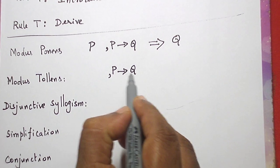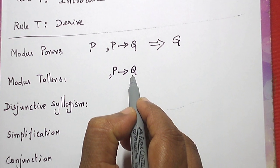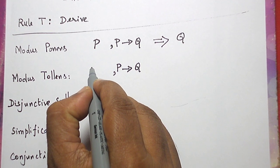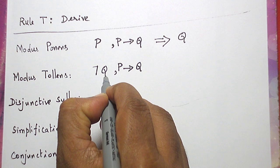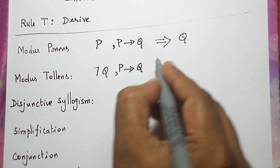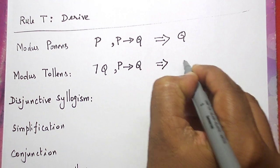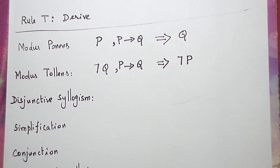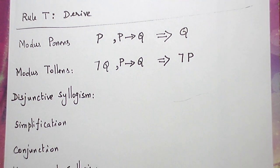And if we have a conditional statement P conditional Q, along with this, we have another statement formula, negation of the right hand side. Then, combining these two, using Modus Tollens, we shall get a premise, a statement formula, negation of the left hand side, negation P.